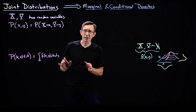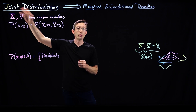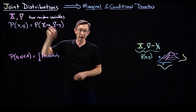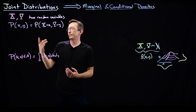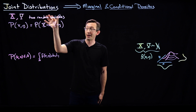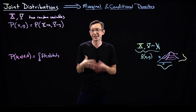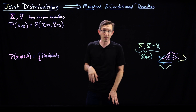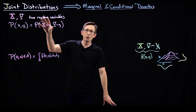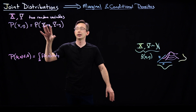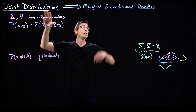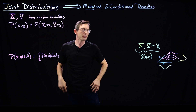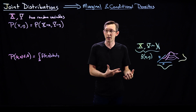Welcome back. In the last lecture, we introduced this notion of a joint probability distribution between two random variables, X and Y — essentially the probability of X happening and Y happening. That notion is going to help us use these joint distributions to compute conditional densities and something called the marginal density. These are important concepts you should know.